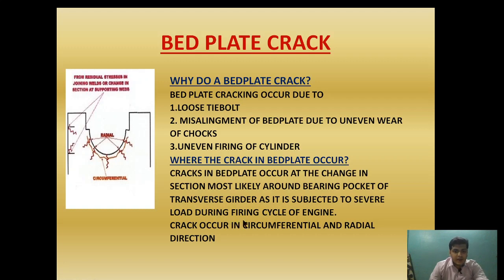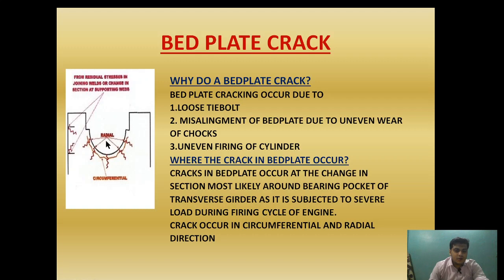The transverse girder is subjected to severe load during the firing cycle of the engine. The weight of the firing load is taken up by the bed plate and transmitted to the hull as thrust, through which the ship moves forward. If this severe firing load is uneven, the load distribution will be uneven, and when the load is transmitted it causes stress in the circumferential and radial directions. If this stress is uneven, crack development may occur — circumferential crack or radial direction crack.